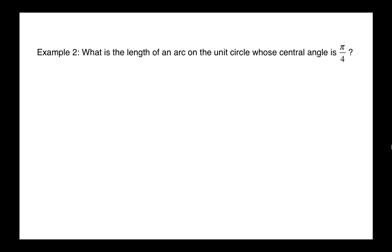Here's another question. What is the length of an arc on the unit circle whose central angle is pi over 4? Here's what that looks like. An arc length is r theta, so if we do 1 times pi over 4, it's pi over 4. So the arc length is equal to the angle in radians.